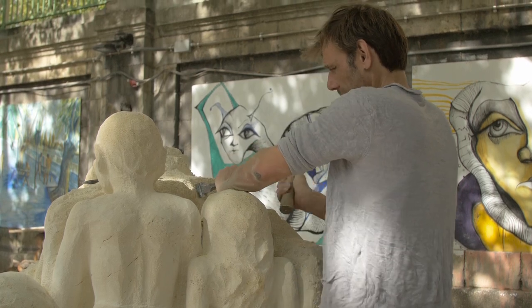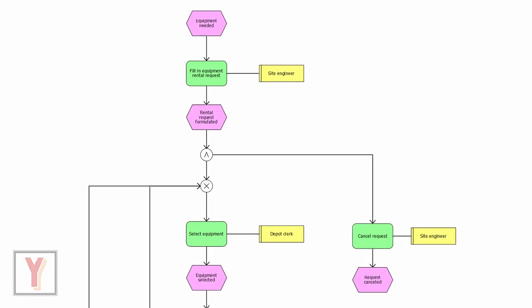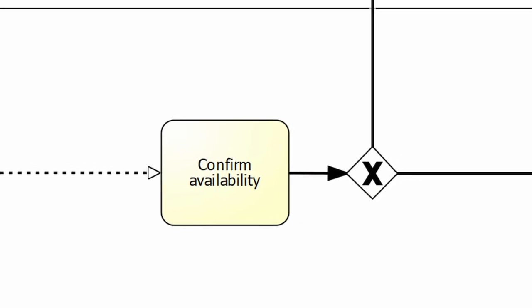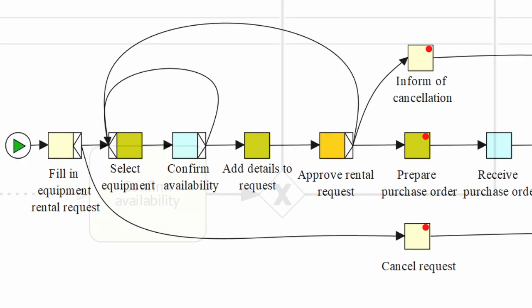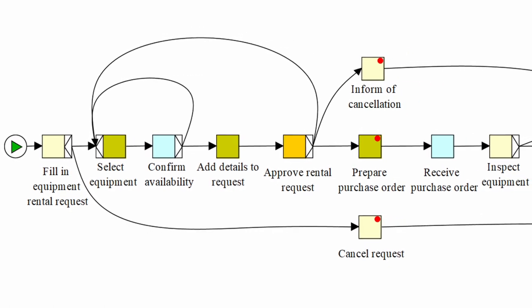Do you want to become a business process modeler? Business processes are always at the center when it comes to talking about information technology. All the information that is produced comes from business processes and all the information that is consumed is consumed by business processes. So business processes are the first thing that you look at when you go into a new organization. And of course, business processes are invisible, so they are quite hard to detect. This is an abstract concept, so if you come to a big enterprise you may be a little overwhelmed.